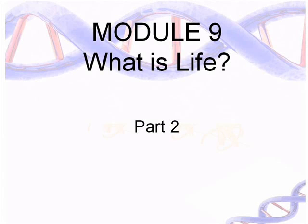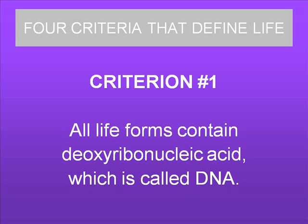This is the second part of the lecture for Module 9, What is Life? In the first part of the lecture, we talked about the first criterion that defines life, and that was that all life forms contain deoxyribonucleic acid, which is DNA.